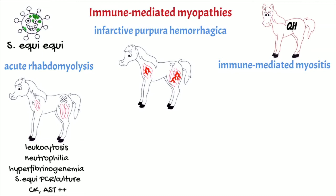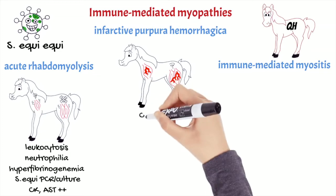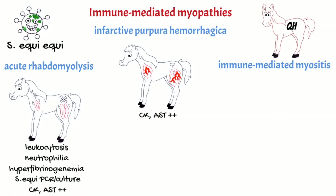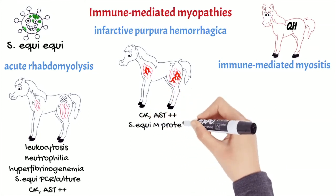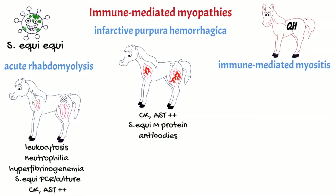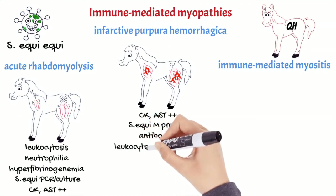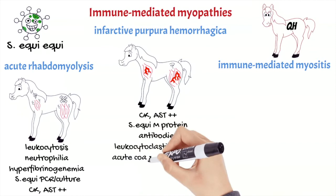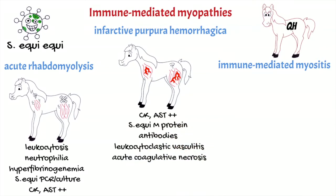With this type of myopathy there is an increase of CK and AST, and of the antibodies against Streptococcus equi M-protein. Muscular biopsies will show leukocytoclastic vasculitis and acute coagulative necrosis.